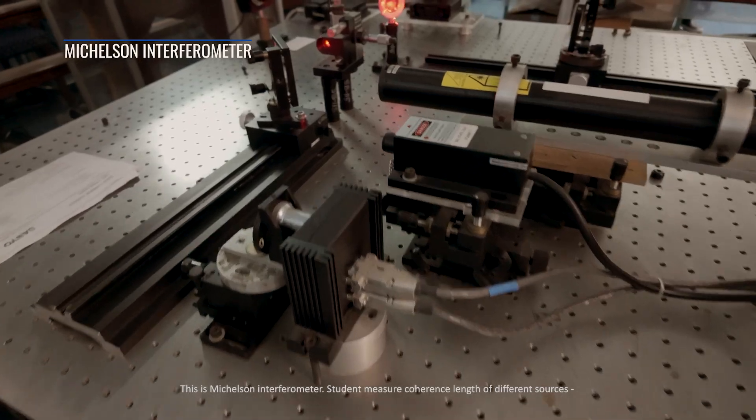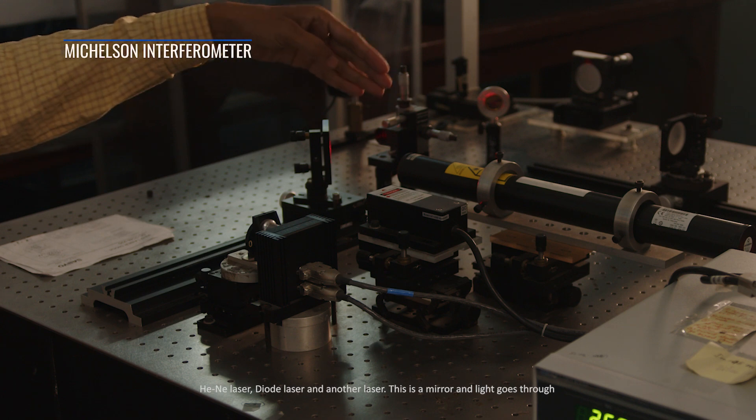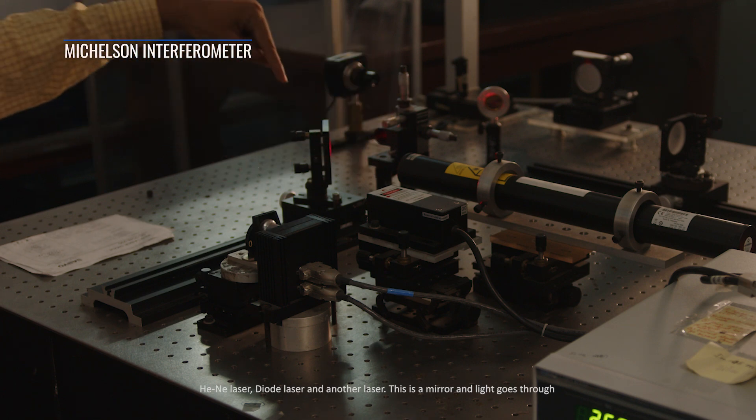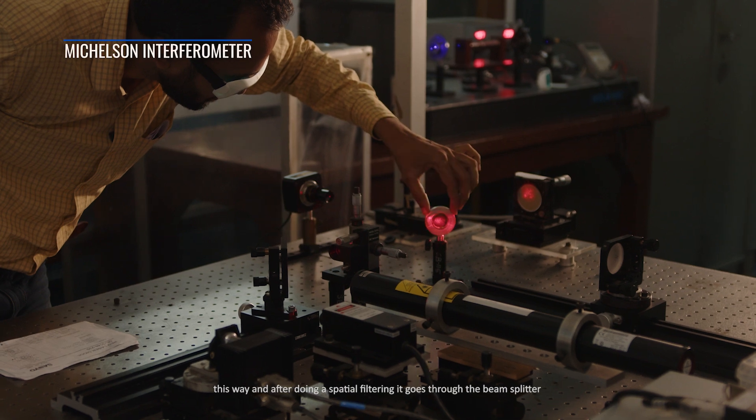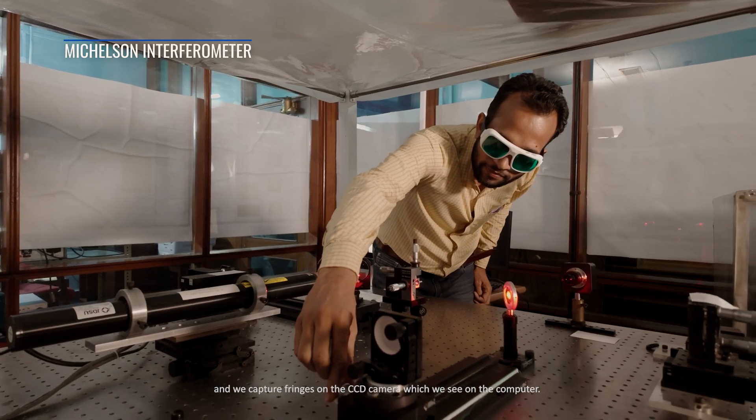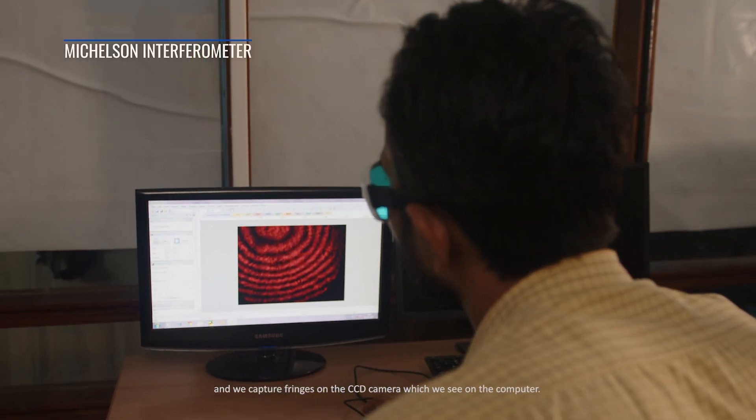This is a Michelson interferometer. Students measure coherence length of different sources: any laser, diode laser, and other lasers. This is the mirror and light goes through this way, and after doing spatial filtering it goes through the beam splitter and we capture fringes on the CCD camera which we see on the computer.